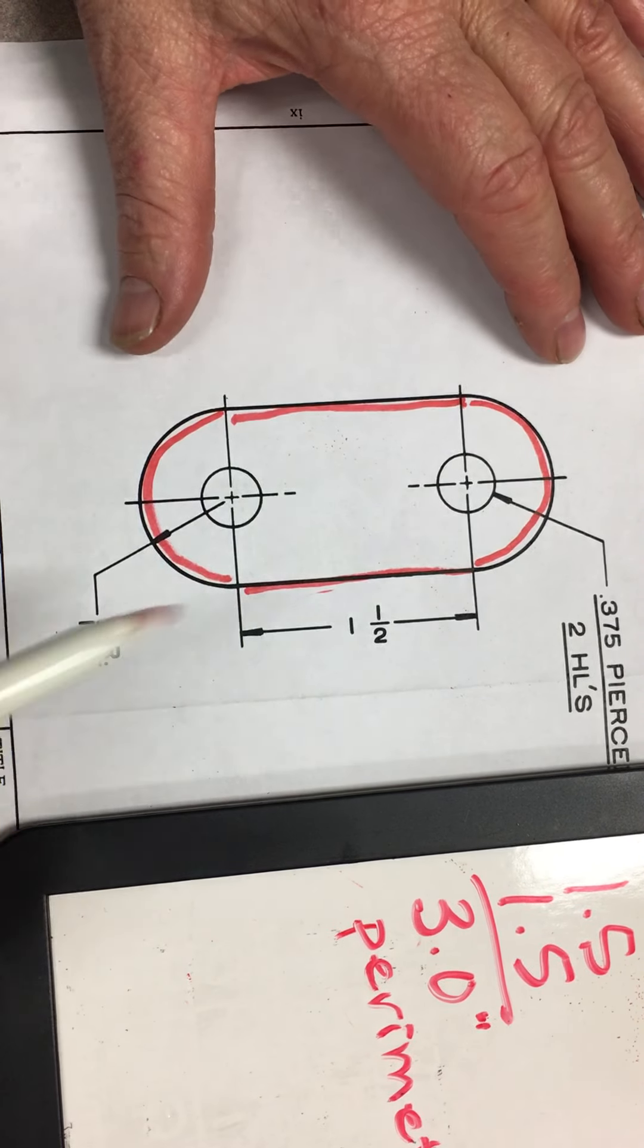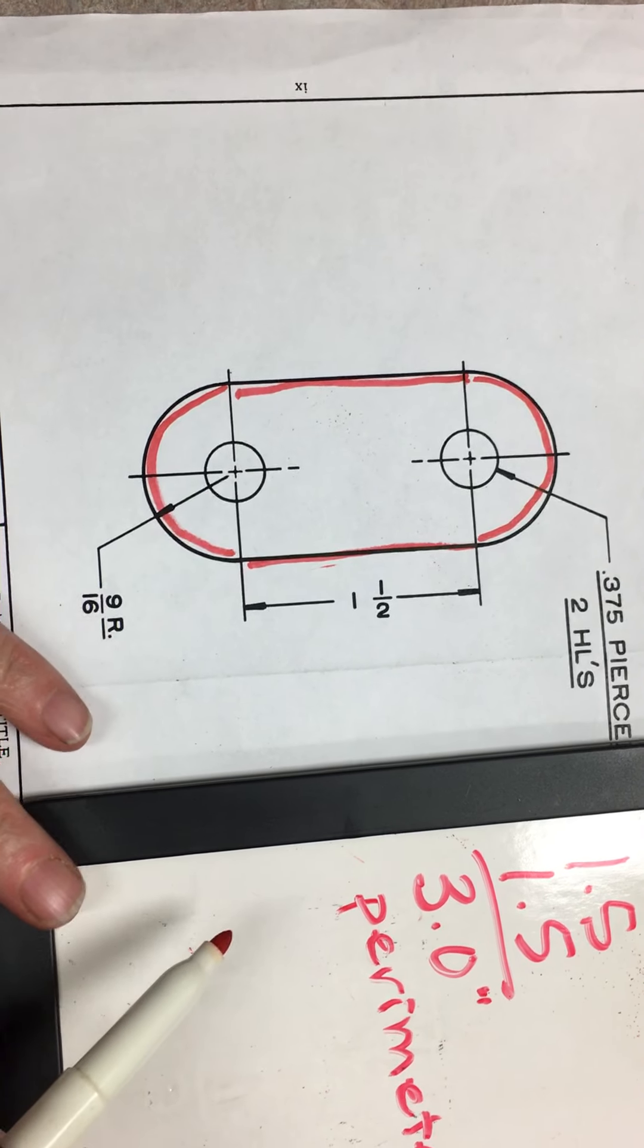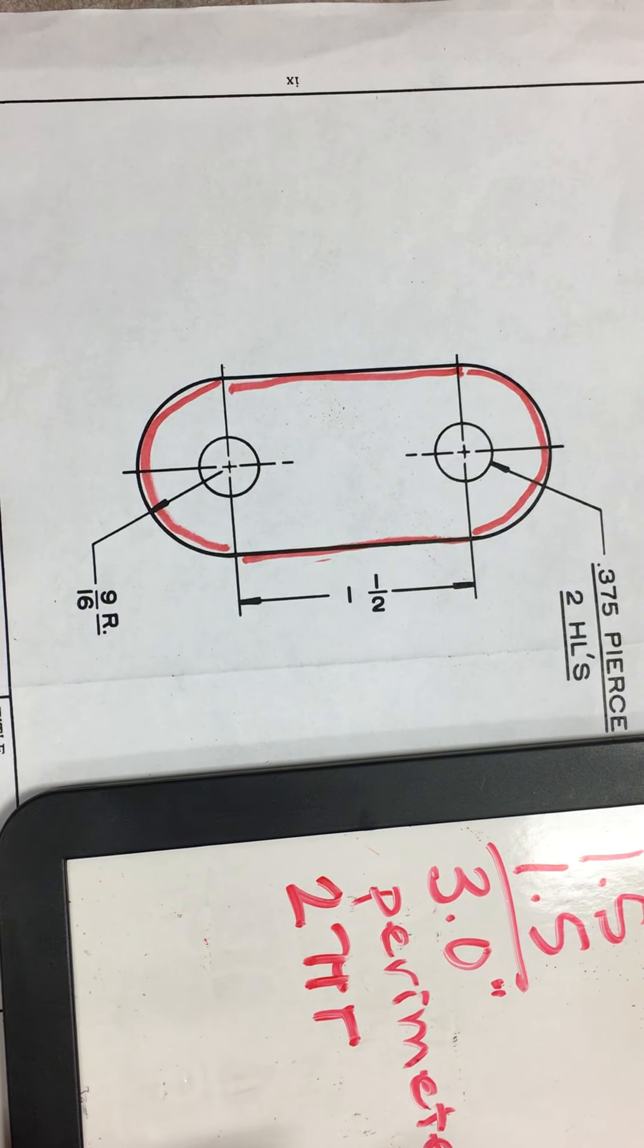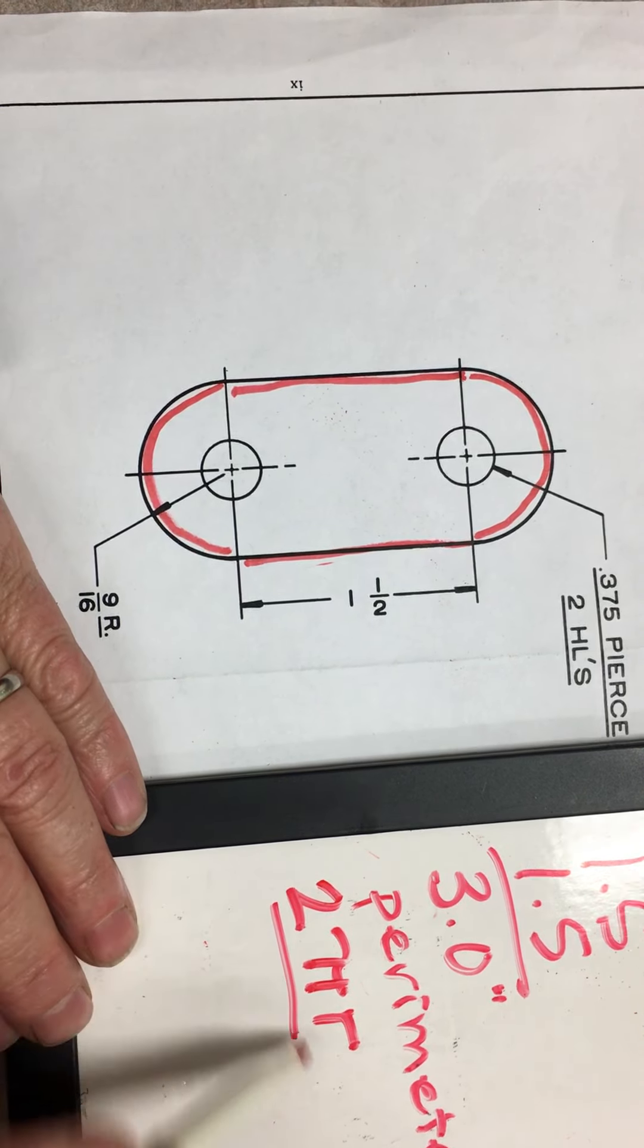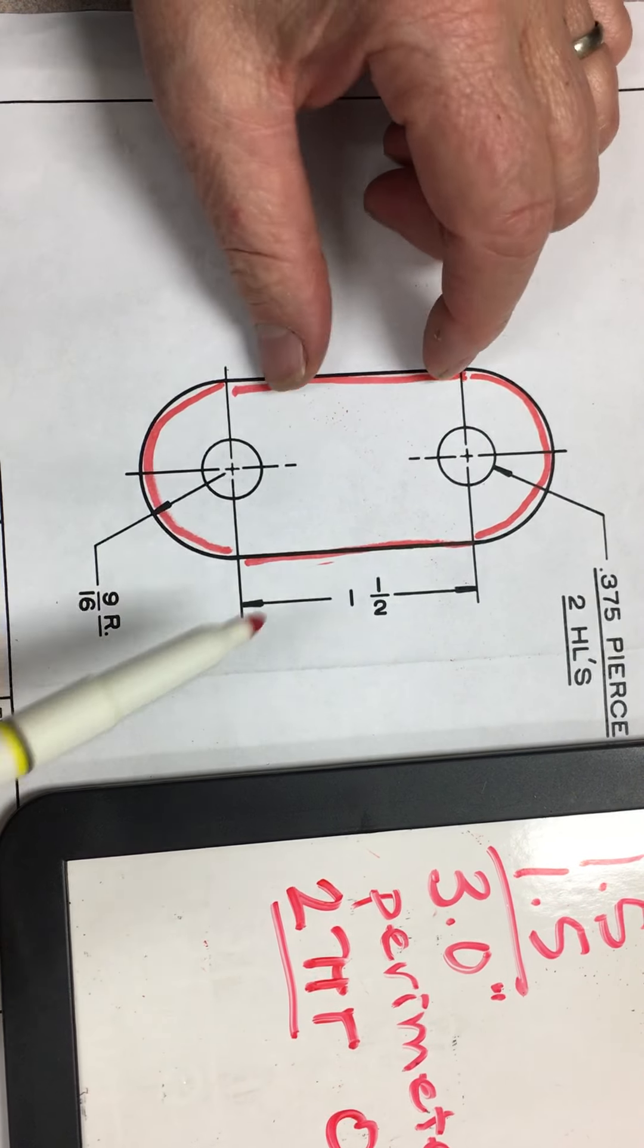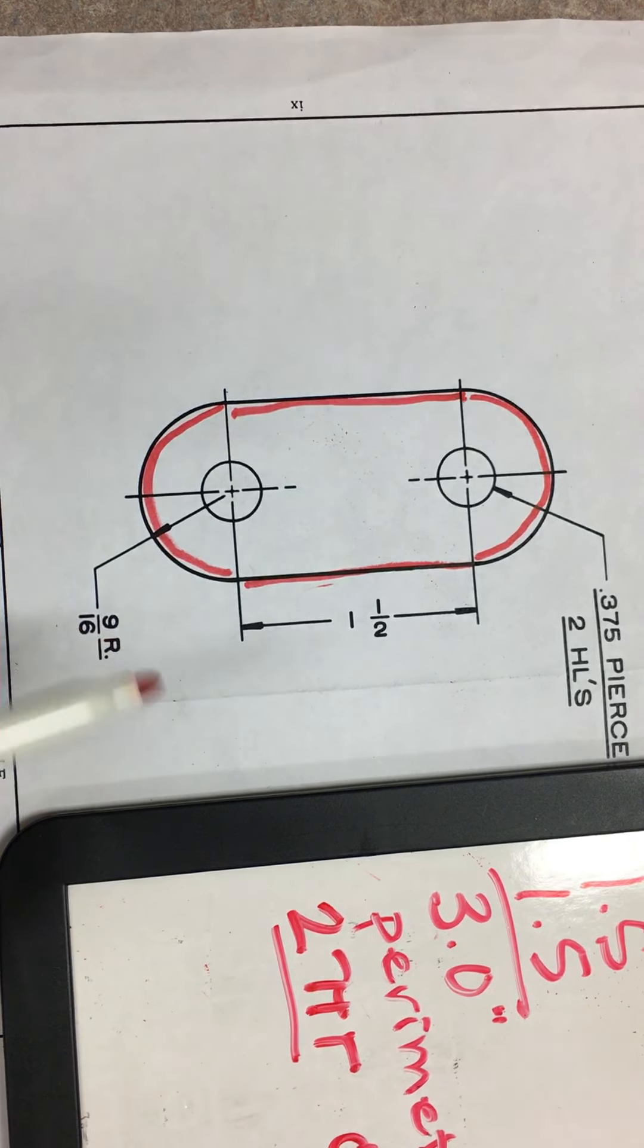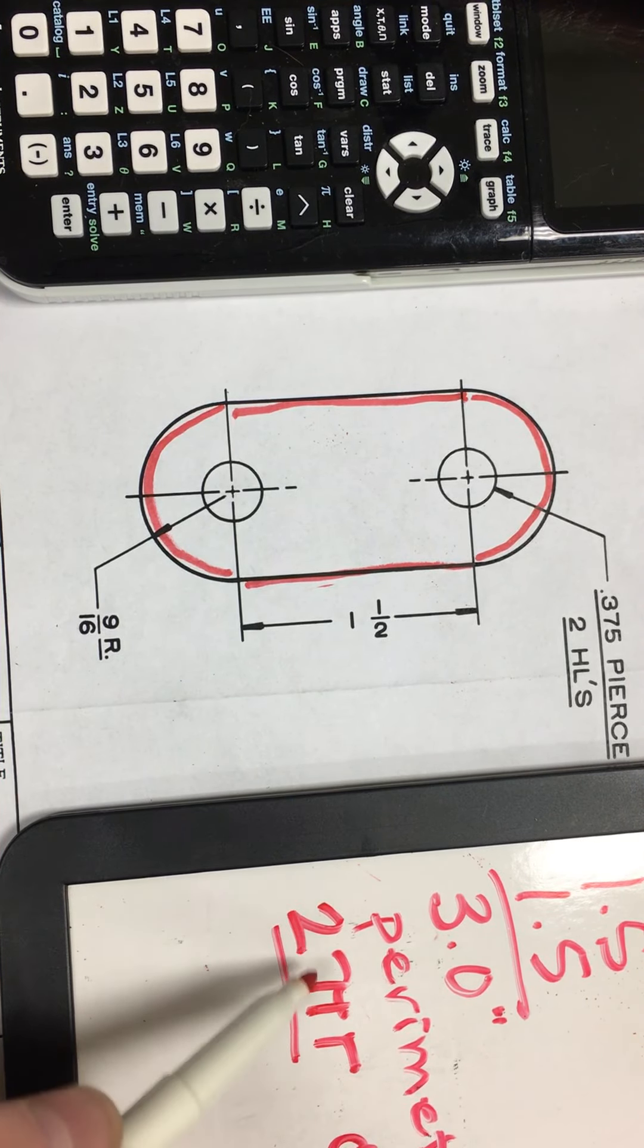Then we need to look at these arcs and circles. We are going to use that old math formula that you are probably pretty familiar with. It is 2πr. In this case, this calculates a complete circle. If we look at this drawing, we actually have two half circles that are each 9 sixteenths. The radius is 9 sixteenths. We have this 2πr here.